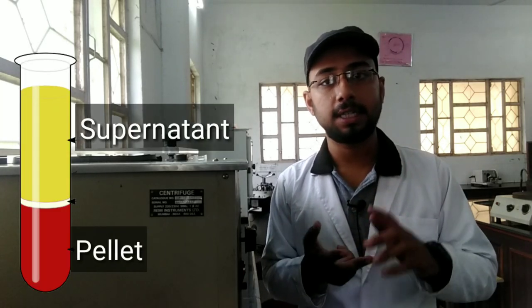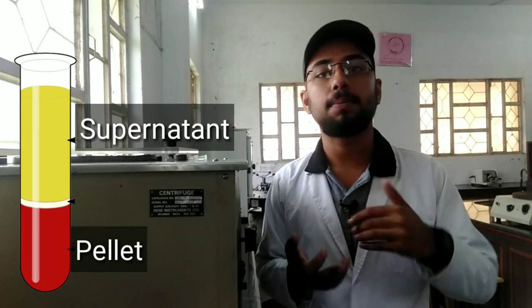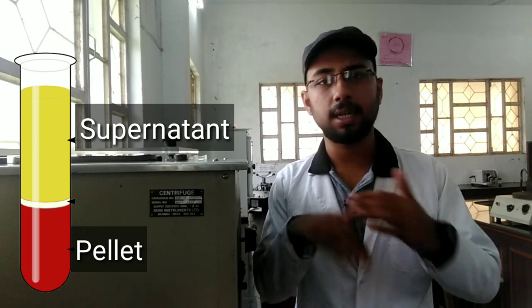For example, in microbiology, when we centrifuge sewage water — which contains lots of algae, protozoa, bacteria, and viruses — we get a pellet at the bottom and a supernatant at the top. The supernatant is the uppermost, lighter part, and the pellet is the lowermost, heavier part.